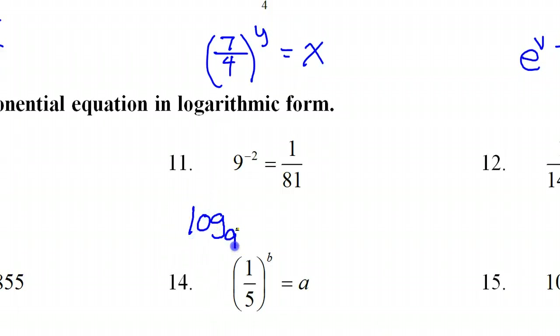Log base 9. 9 is the base. These two things basically switch places. So it should be 1... Whoops. Dyslexia alert. So that's 1 over 81 is equal to negative 2.